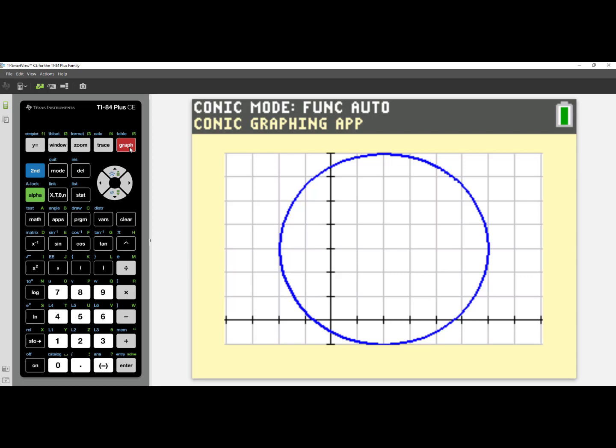When I press Graph, which is associated with the Graph key, I will see my circle centered at 2, 3, and has a radius of 4. When I press Trace, I have the ability to trace the circumference of the circle to pull any data values that might be of interest for my graph.